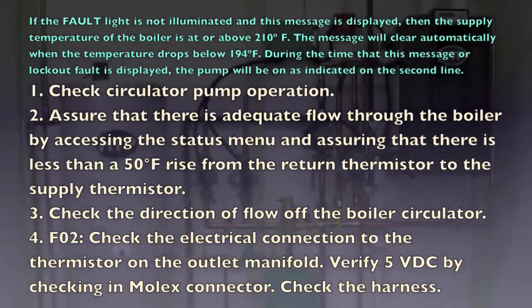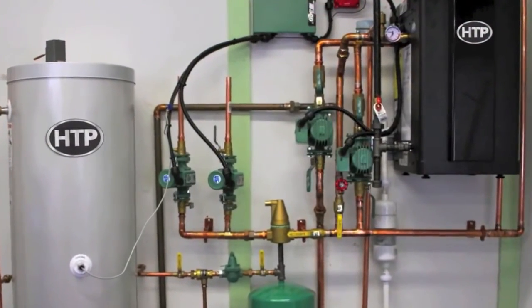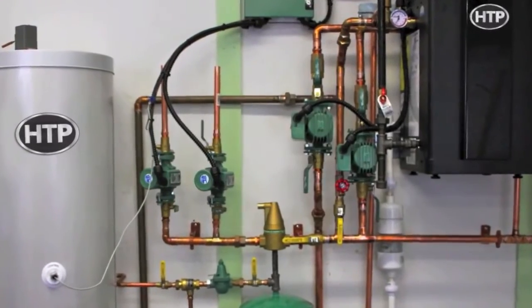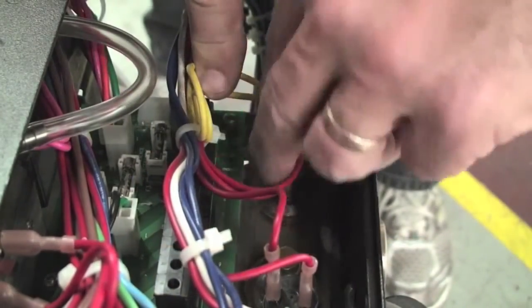If you have checked the circulator function and the boiler does not appear to be hot, then check the supply sensor fault F02. If you continue to have an issue, please call the factory for further assistance.